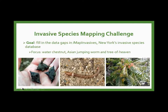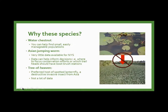The species mapping challenge goal is to fill in data gaps in IMAP Invasives, New York's invasive species database. We're focusing on three species: water chestnut, an aquatic invasive; Asian jumping worm, a terrestrial issue; and tree of heaven, an invasive tree. For water chestnut, if found in a small population you can very easily monitor and remove it — we want to know where smaller populations are before they become vast mats.